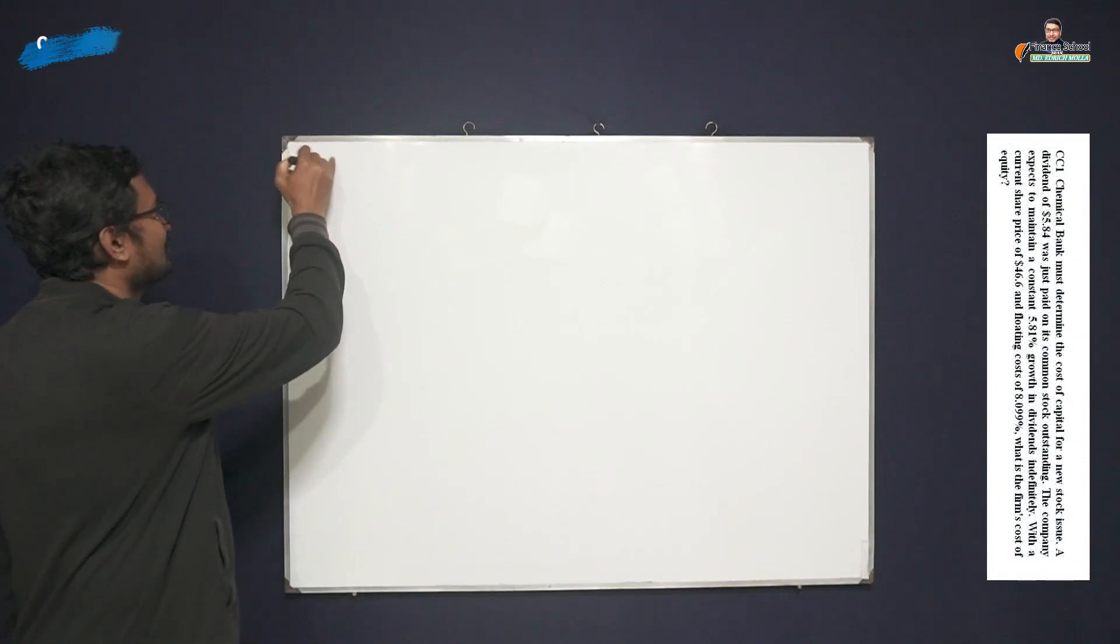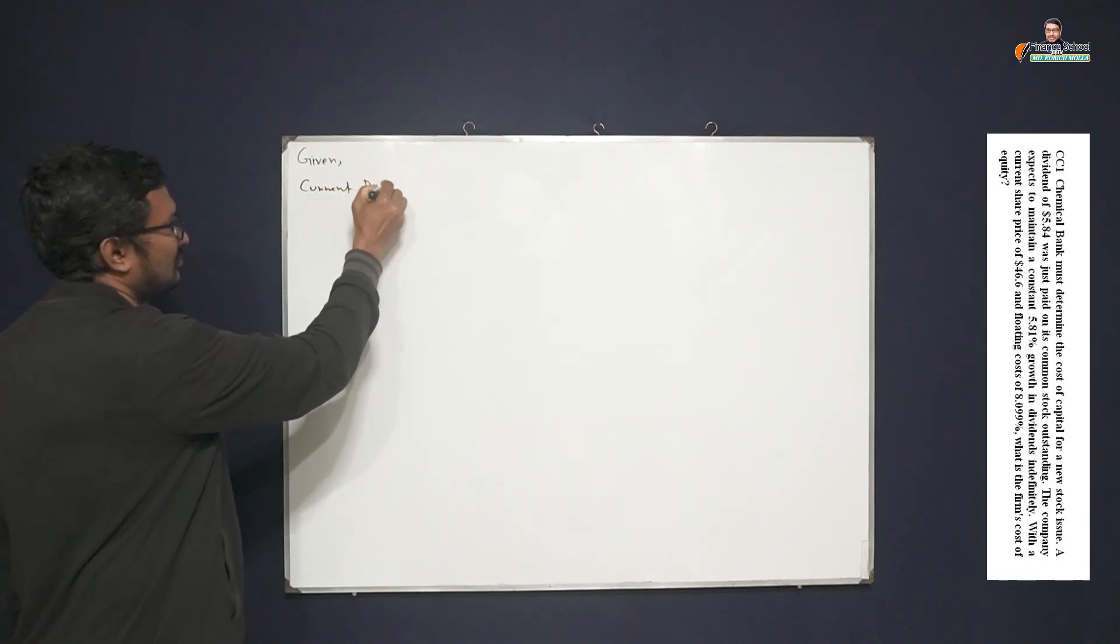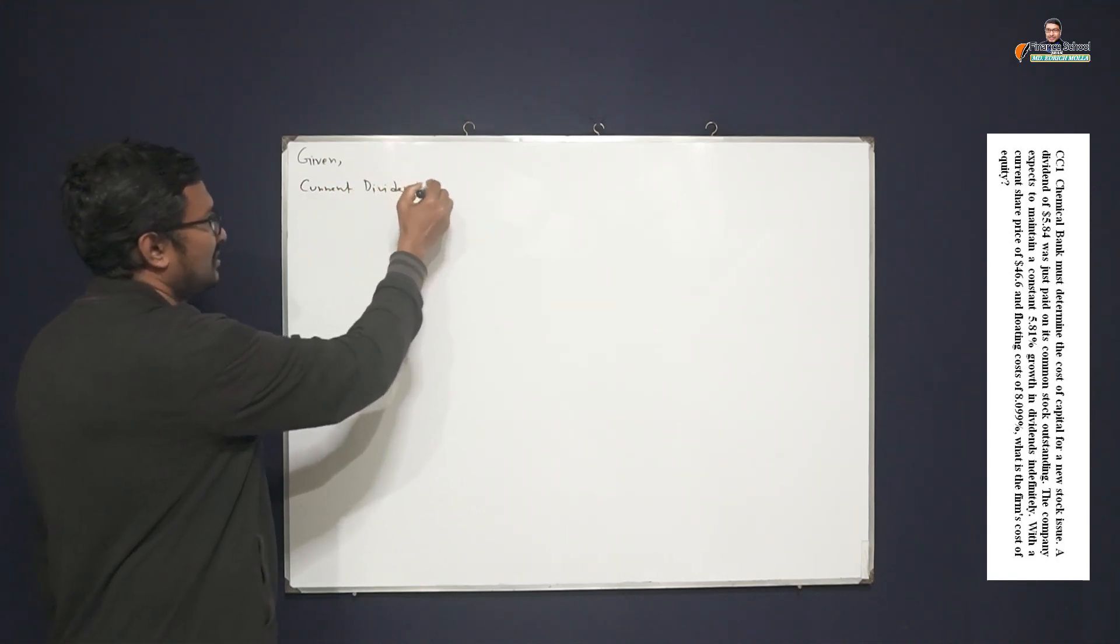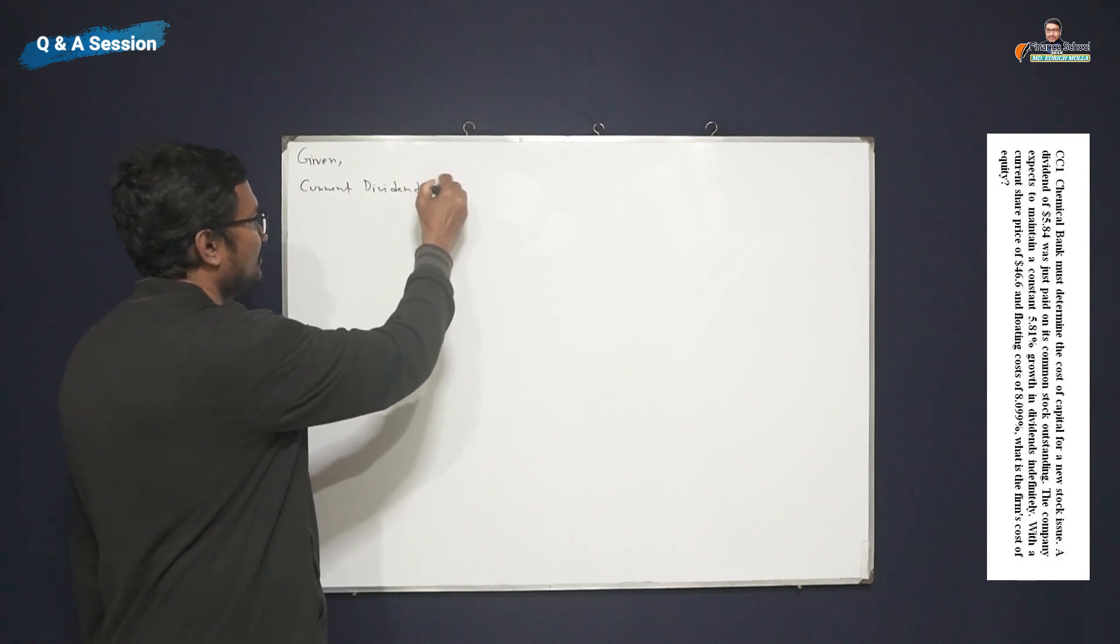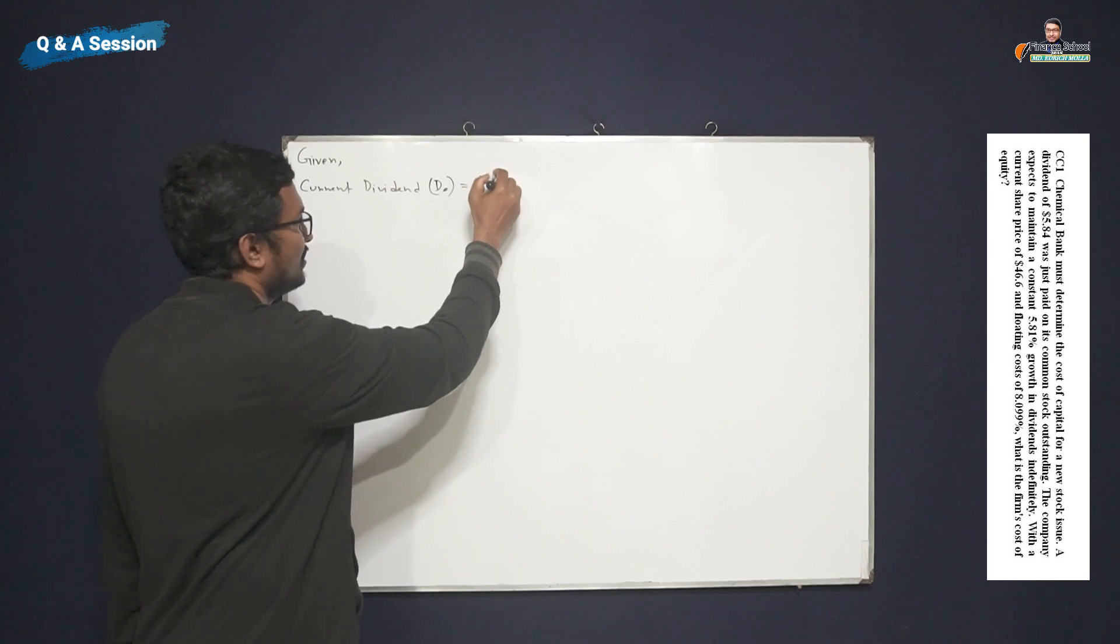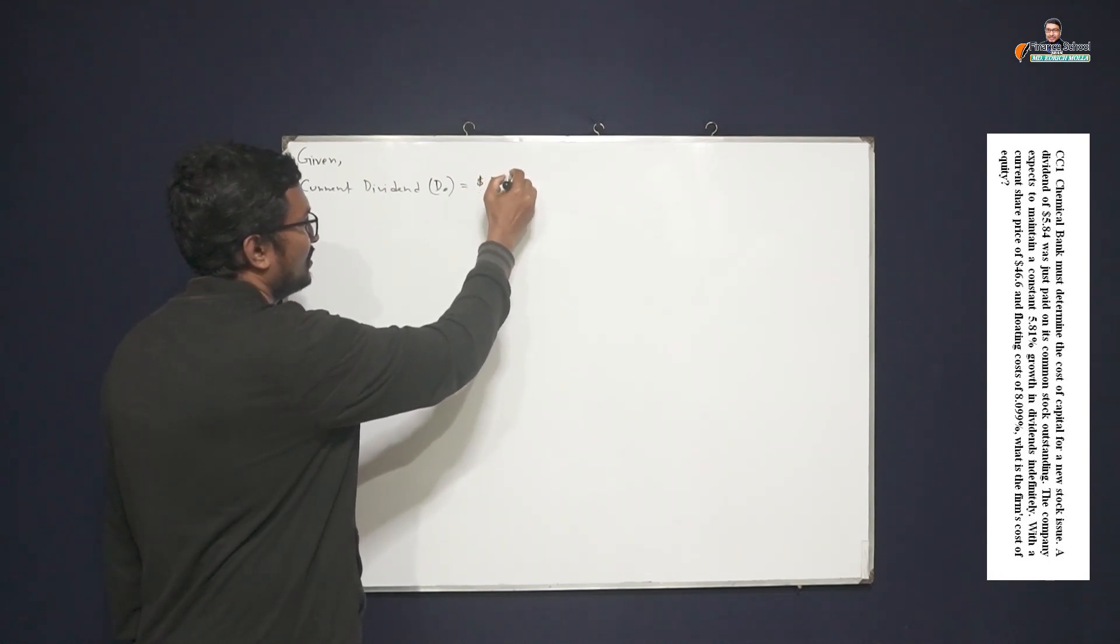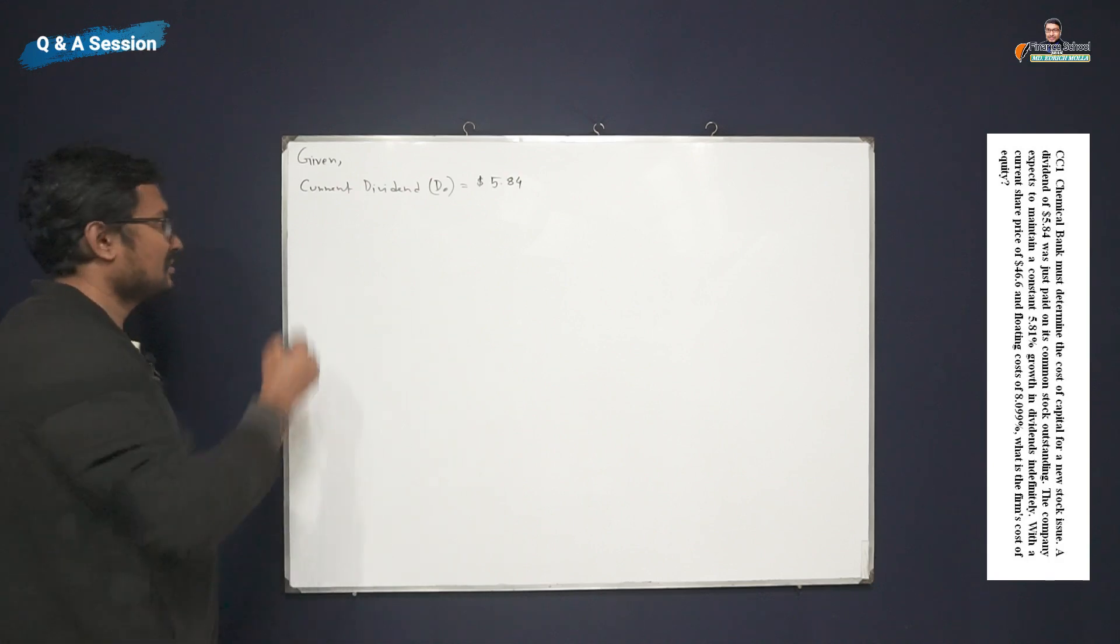We are given the current dividend, denoted by D₀, so D₀ is equal to 5.84. On the other hand, the growth rate, which is constant growth rate, is denoted by small g and it is 5.81%.